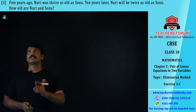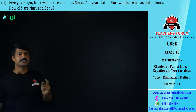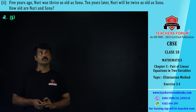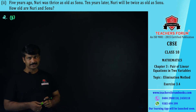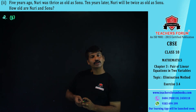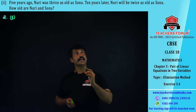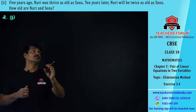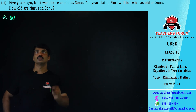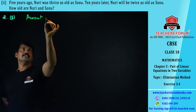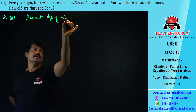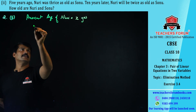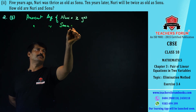Let us solve the second problem. It is given that five years ago Nuri was three times as old as Sonu, and after 10 years Nuri will be twice the age of Sonu. Those are the two conditions. You have to find their present ages. There are two characters: Nuri and Sonu. Let us assume the present age of Nuri is x years and the present age of Sonu is y years.